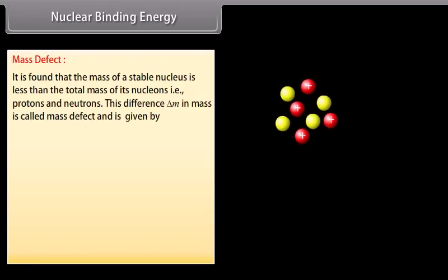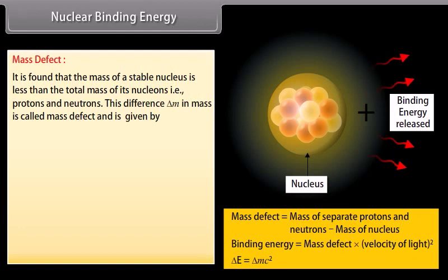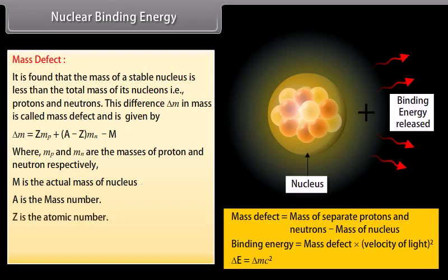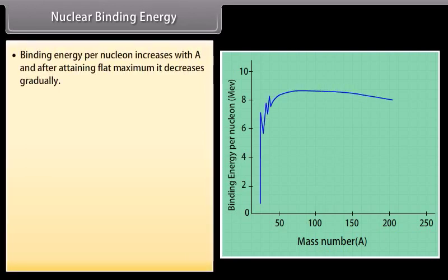Nuclear binding energy. Mass defect: It is found that the mass of a stable nucleus is less than the total mass of its nucleons, that is protons and neutrons. This difference ΔM in mass is called mass defect and is given by ΔM is equal to ZMₚ plus (A minus Z) into Mₙ minus M, where Mₚ and Mₙ are the masses of proton and neutron respectively. M is the actual mass of nucleus, A is the mass number, Z is the atomic number. The energy equivalent to the mass defect, that is ΔM into C², is the binding energy Eᵦ of the nucleus.